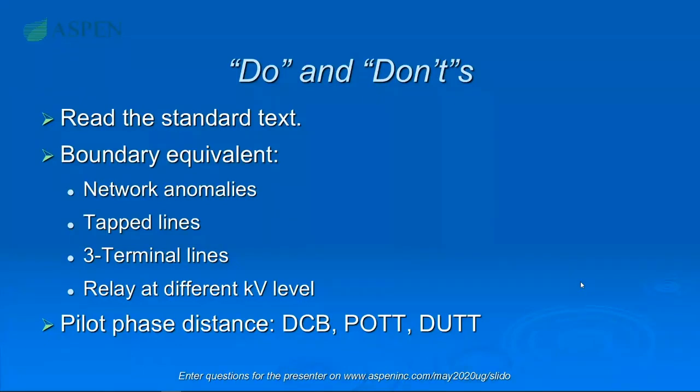Multi-level definite time overcurrent element modeling will be there — right now in one-liner you have only instantaneous trip in the overcurrent relay, but now you'll also be able to have one up to five levels of definite time tripping. We also plan to let you add longer bus names alongside the old one, which is limited to 12 characters — there will be an extra one that lives in parallel.